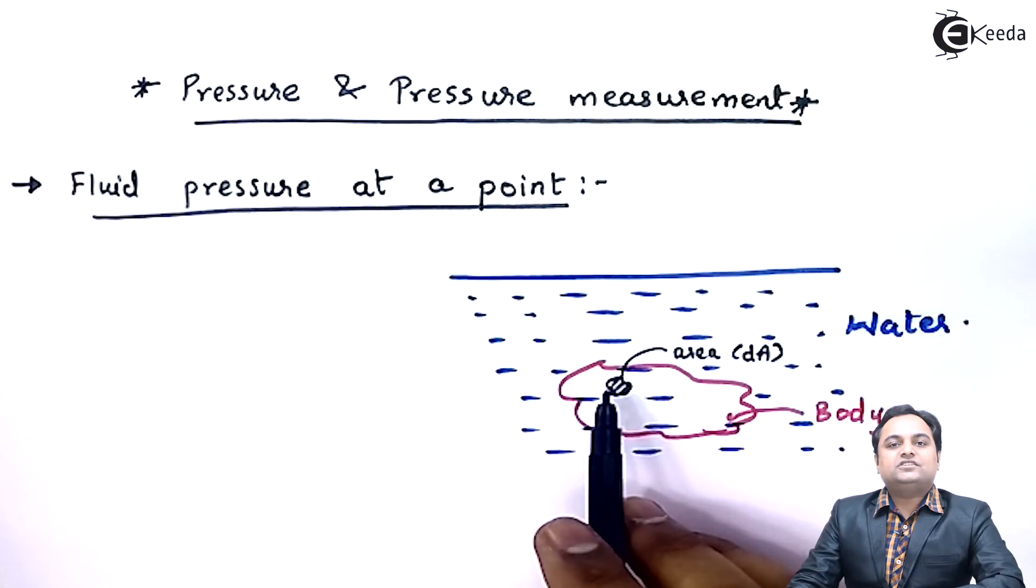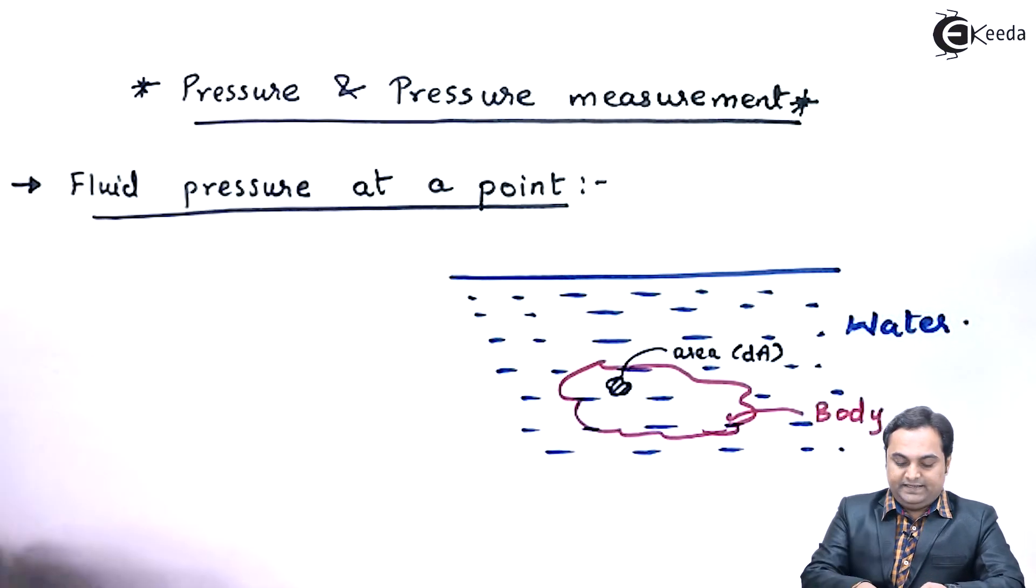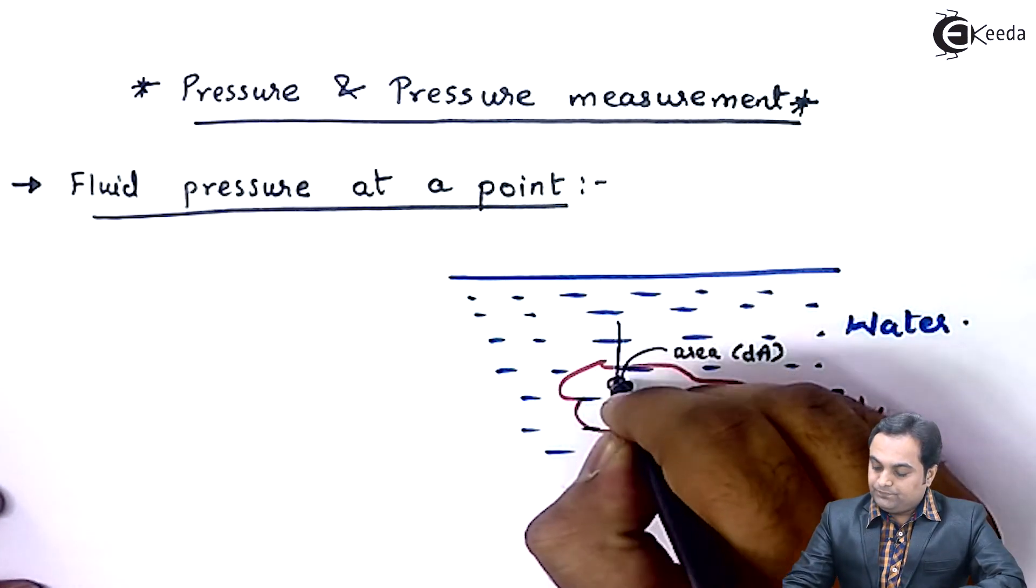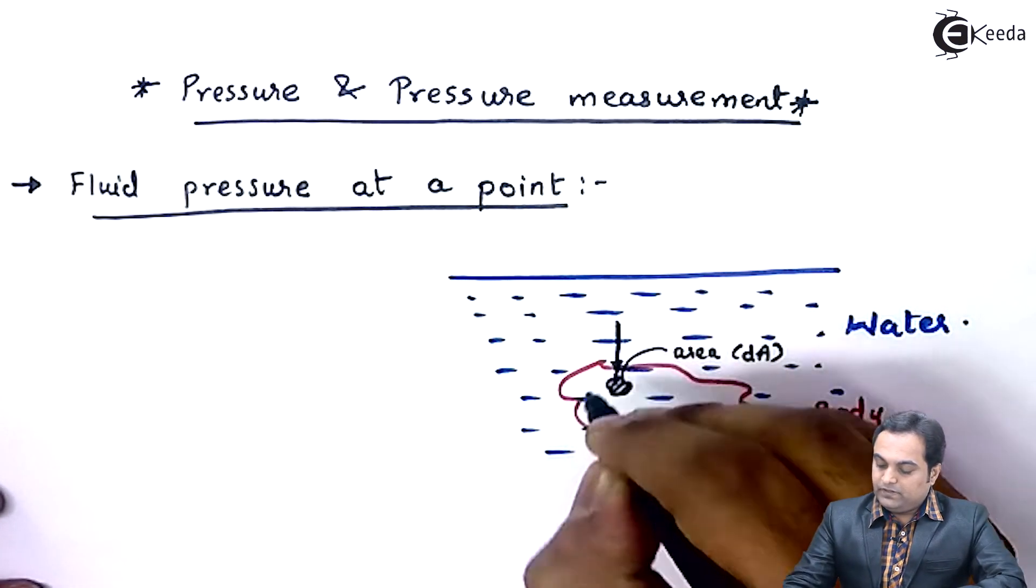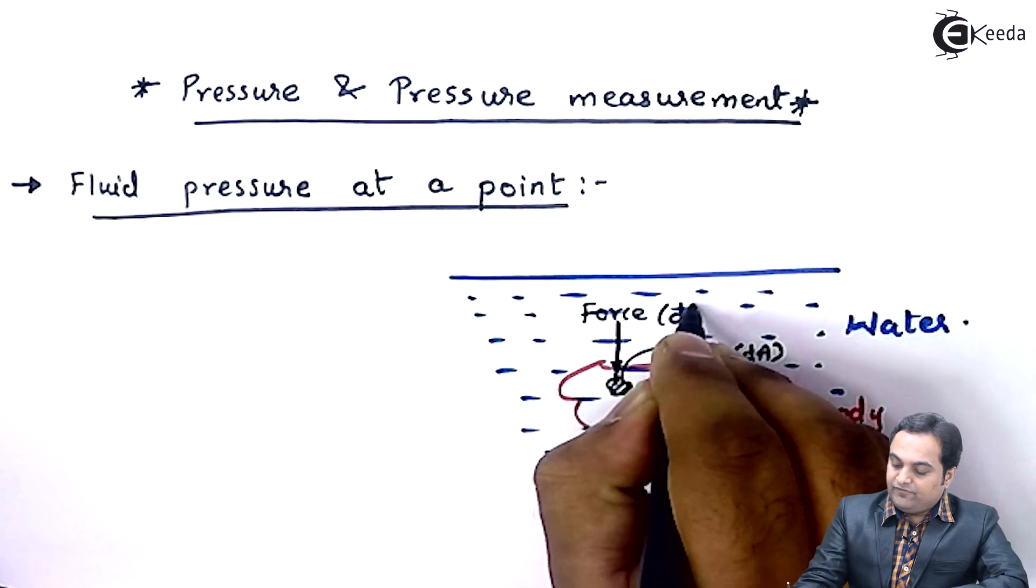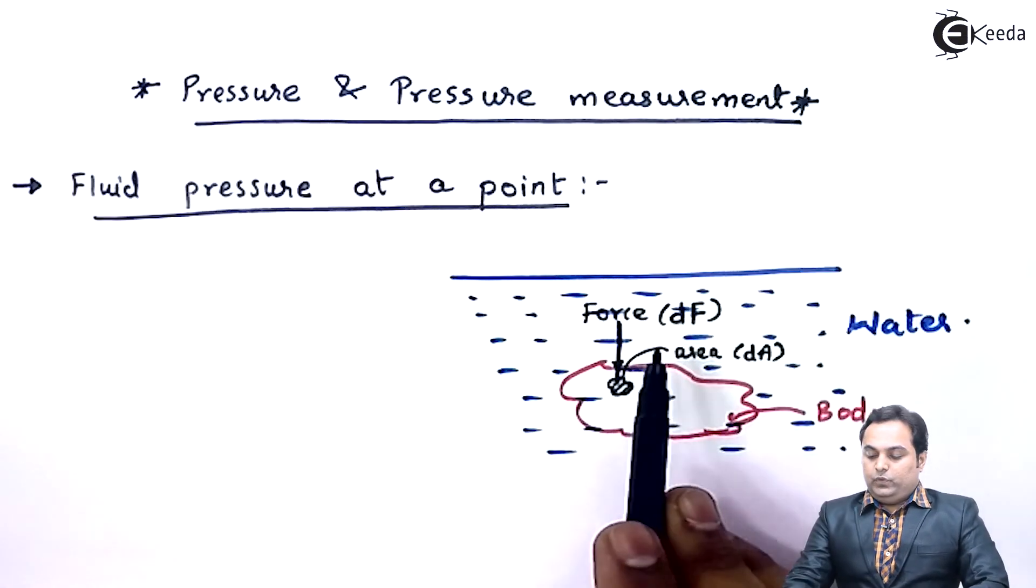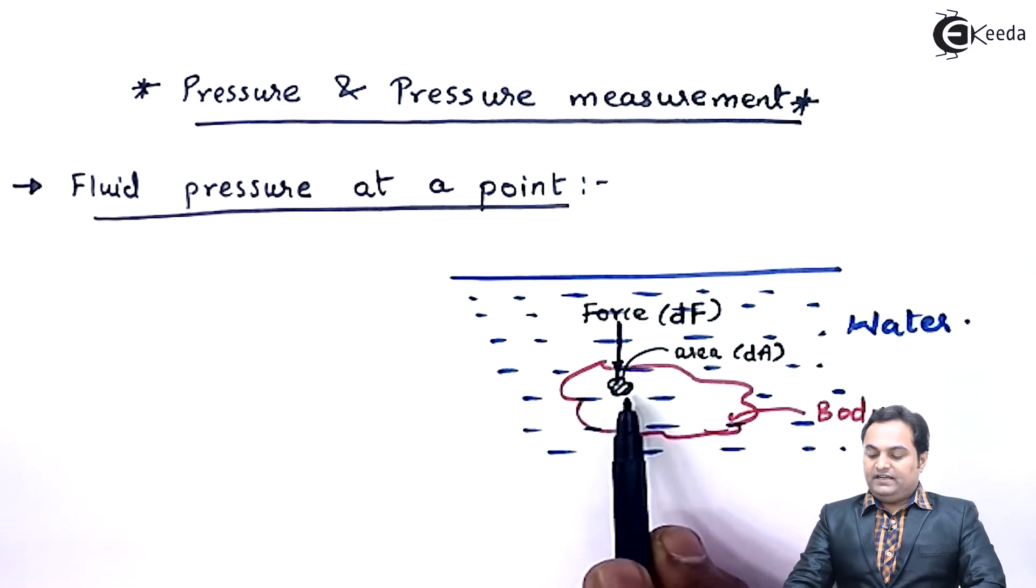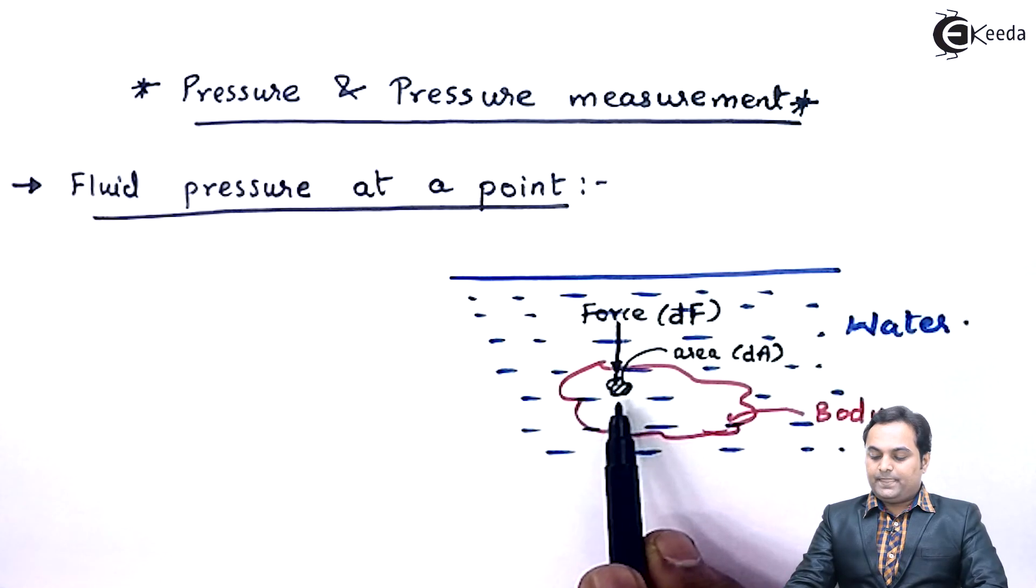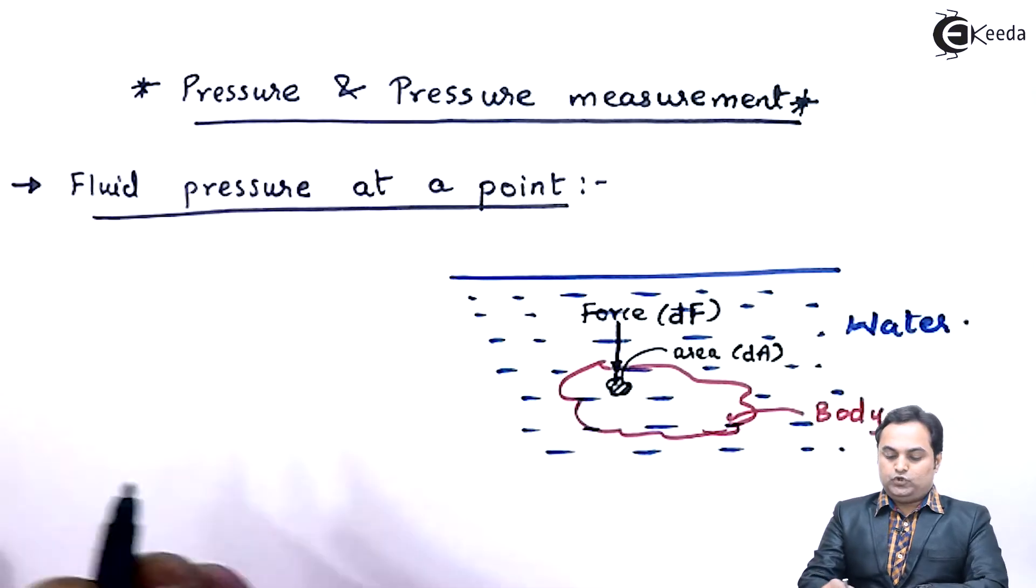Now over this small amount of area, a small force would be acting. That force I am denoting here, it is denoted by force dF. So now when a force dF acts on an area dA, that would be called as intensity of pressure.